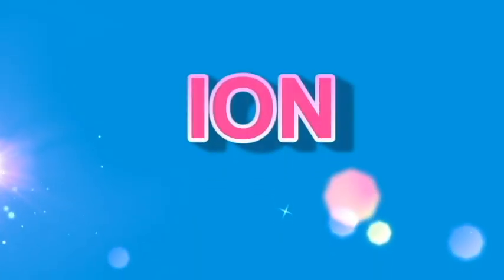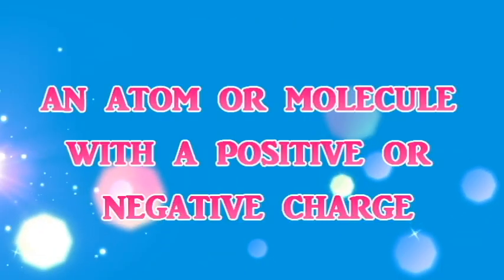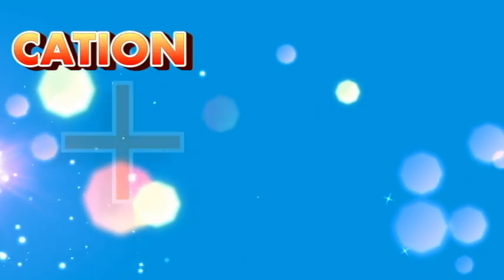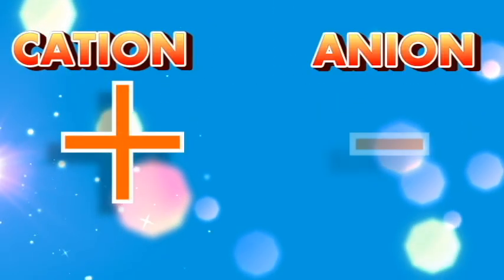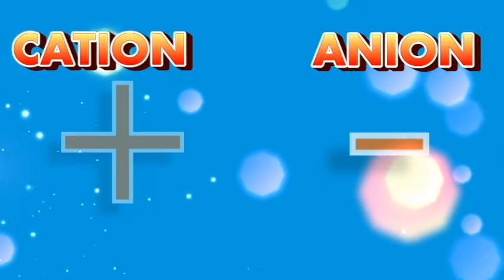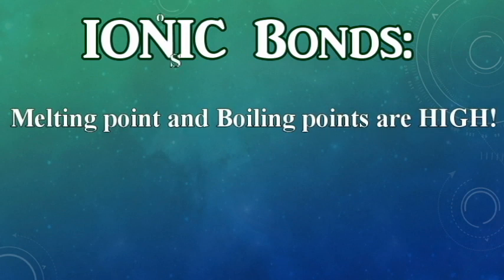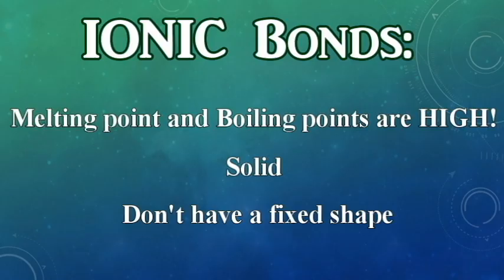Ionic bonds make ions, and an ion is an atom or molecule that has either a positive or negative charge. A cation is an ion with a positive charge, and an anion is an ion with a negative charge. Ionic bonds generally have melting points and boiling points that are high. They are normally solids, and they usually don't have a definite shape.